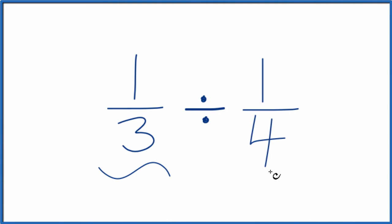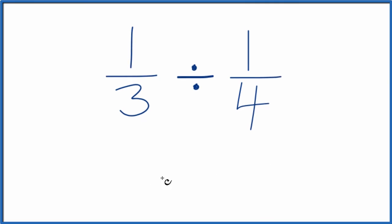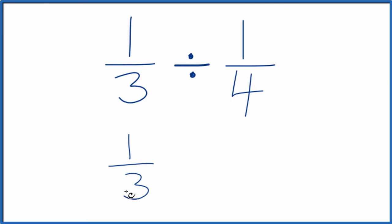Let's divide one-third by one-fourth. So first, let's write one-third, but instead of division, let's multiply it by the reciprocal.